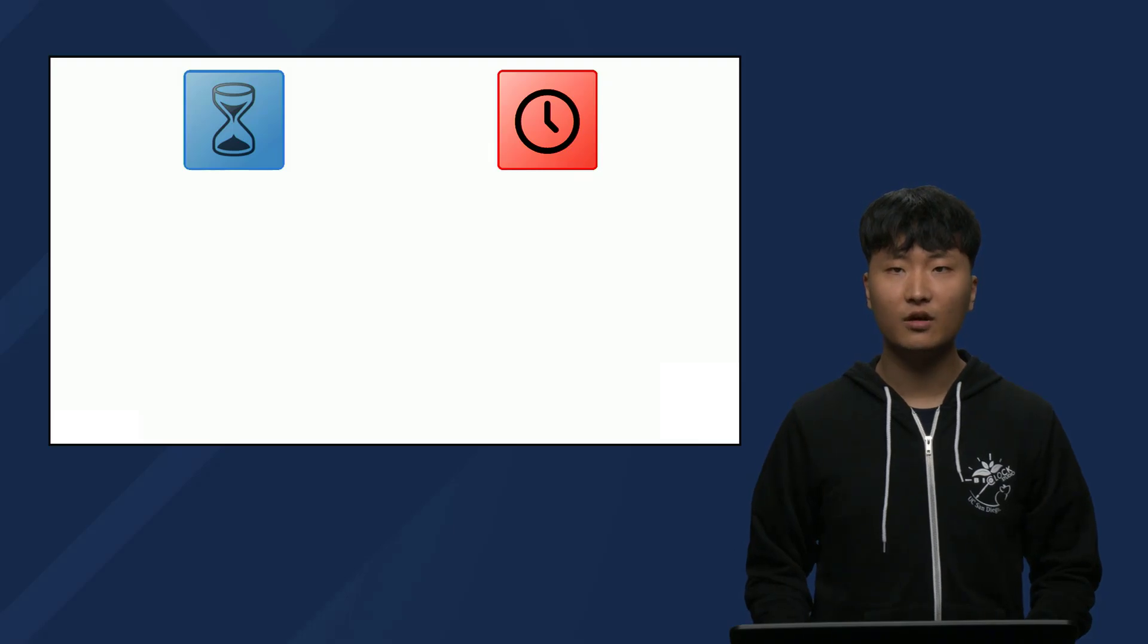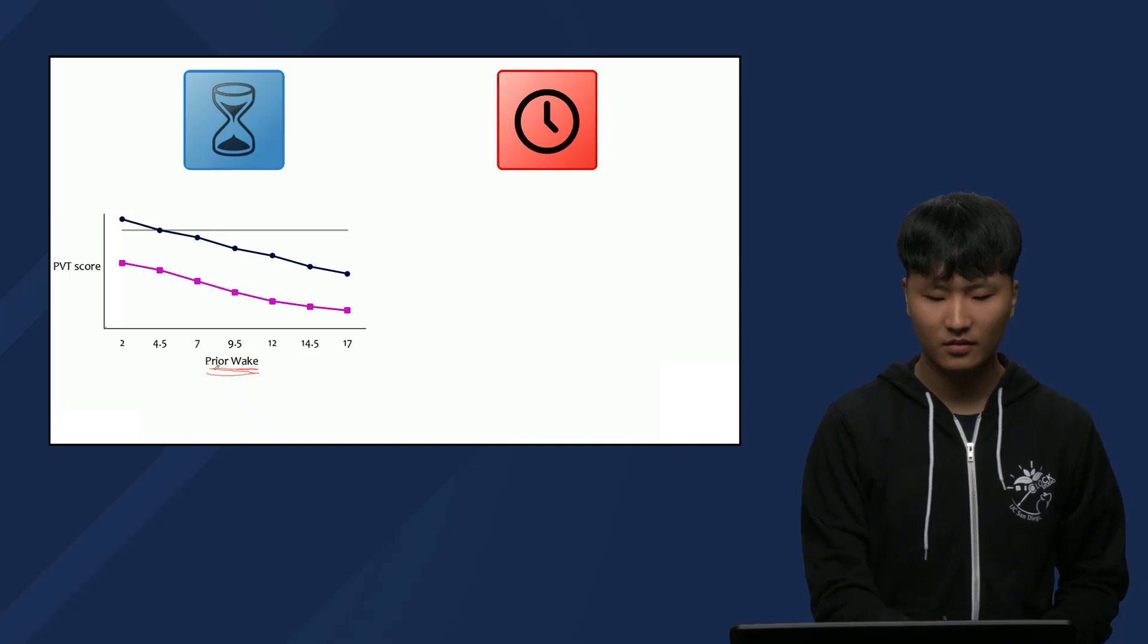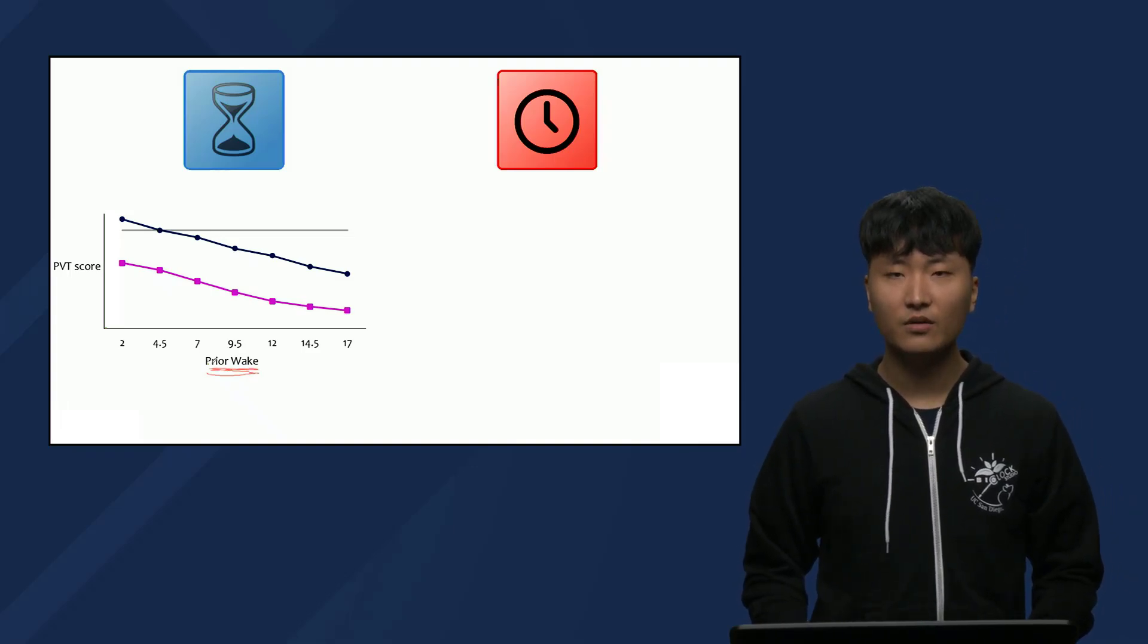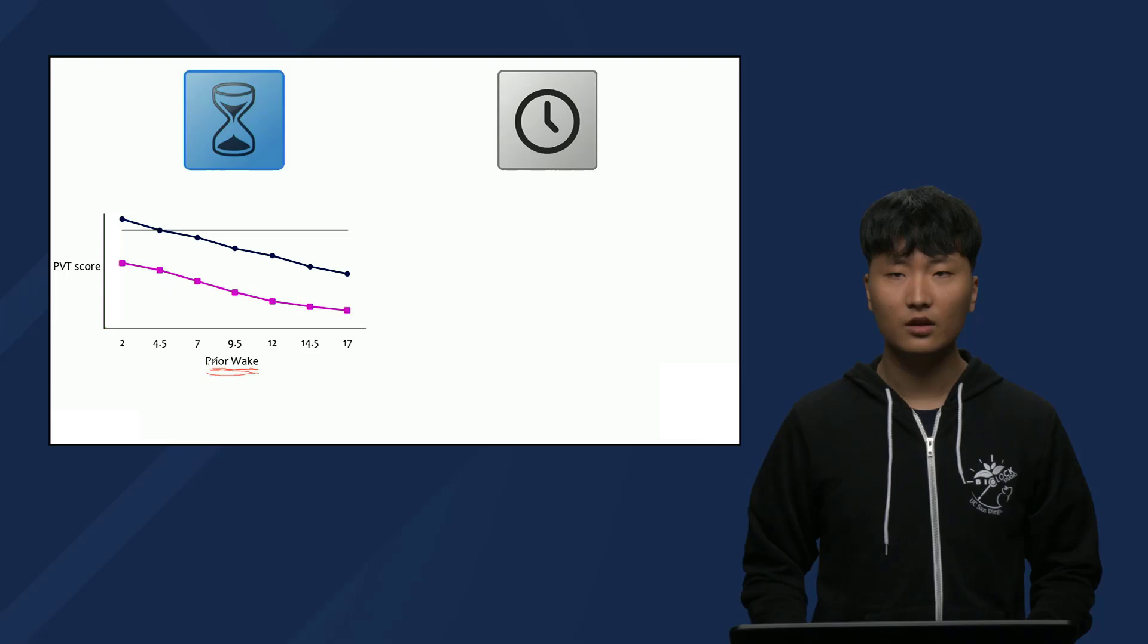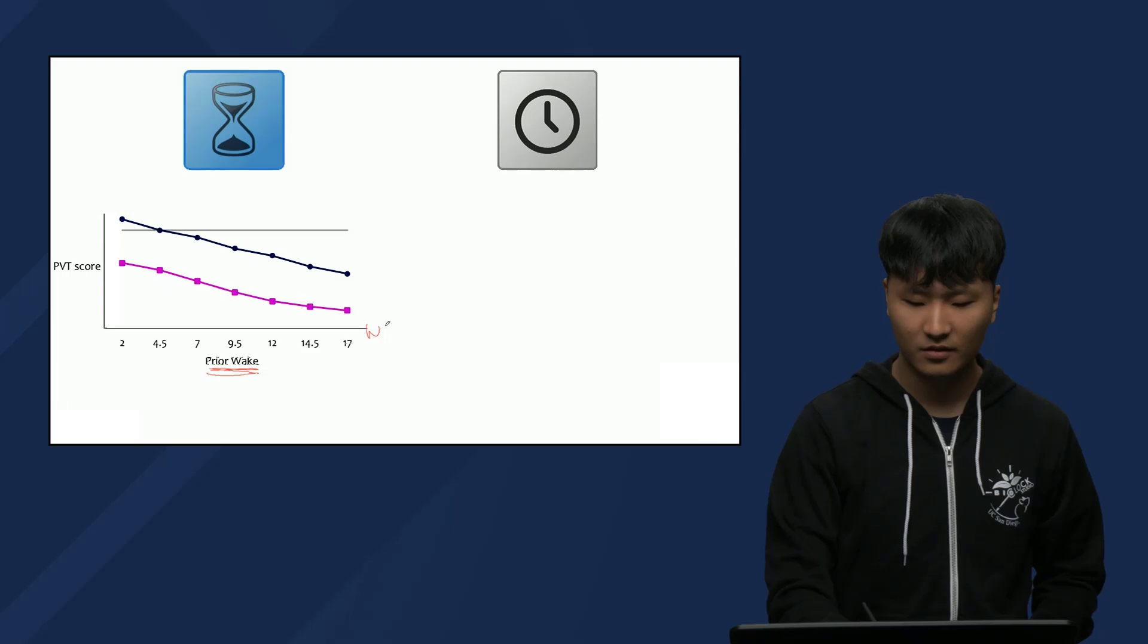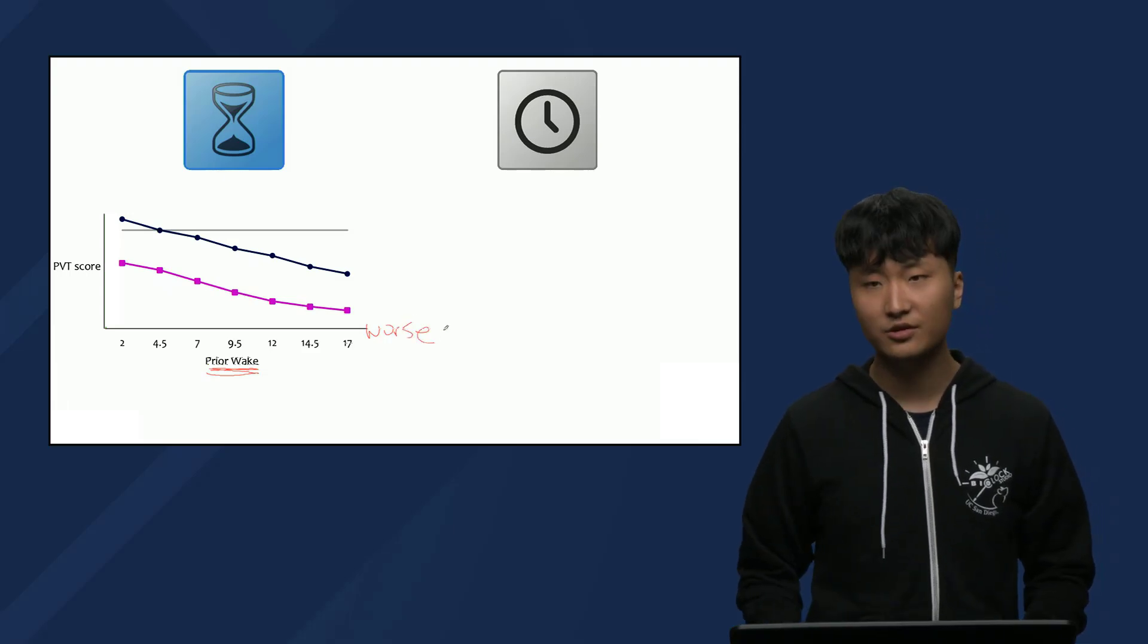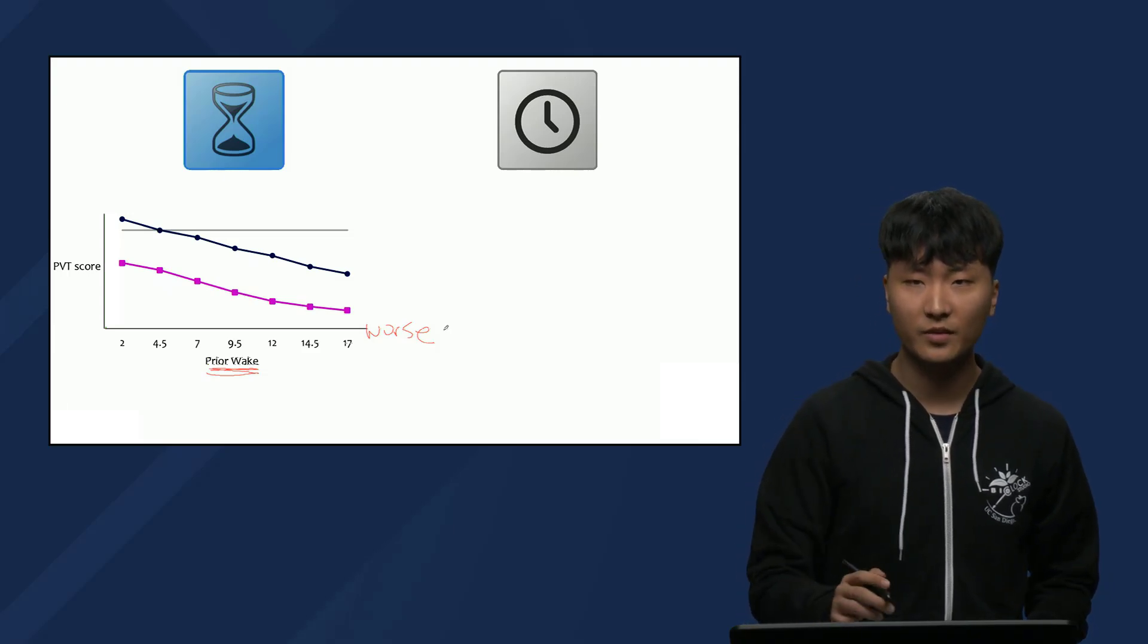Here's a simplified representation of what the researchers found. In this graph, the x-axis is the number of hours participants have been awake. So for now, we are primarily examining the effects of the homeostat, or Process S. The y-axis is the subject's performance on the PVT. Lower values on the y-axis represent worse performance on the PVT, or slower reaction, and higher values represent better performance, or faster reaction.